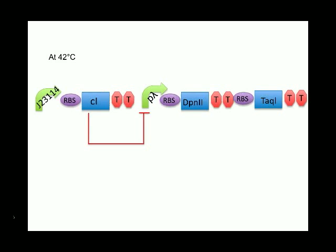When the temperature is increased to 42 degrees Celsius, the CI protein denatures, and CI is now no longer able to repress the promoter. Therefore, the downstream restriction enzymes are transcribed, and the genetic material is digested.